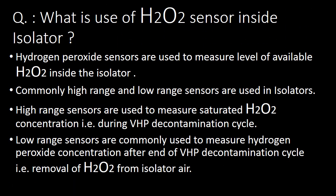Next important question: what is the use of H2O2 or hydrogen peroxide sensors inside the isolator? Hydrogen peroxide sensors are used to measure the level of available hydrogen peroxide inside the isolator. High-range sensors measure the saturated hydrogen peroxide concentration during the VHP decontamination cycle. Low-range sensors measure hydrogen peroxide concentration after the end of the VHP decontamination cycle — that is, during removal of hydrogen peroxide from the isolator air.